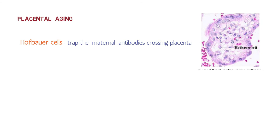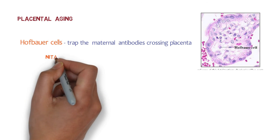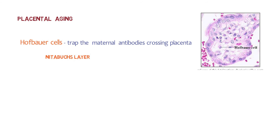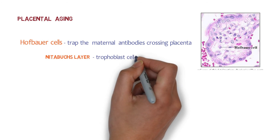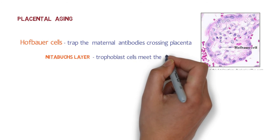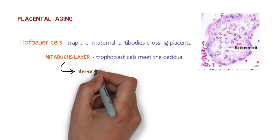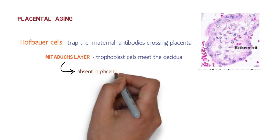There is an area of fibrinoid degeneration where the trophoblast cells meet the decidua, known as the Nitabuch's layer. This layer limits further invasion of the decidua by the trophoblast. Remember, this membrane is absent in placenta accreta.